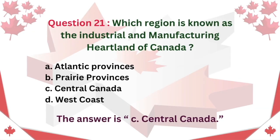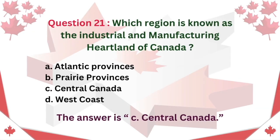Question 21. Which region is known as the industrial and manufacturing heartland of Canada? A. Atlantic provinces B. Prairie provinces C. Central Canada D. West coast. The answer is C. Central Canada.